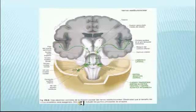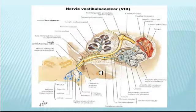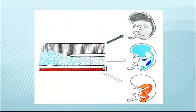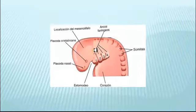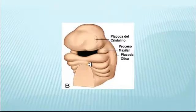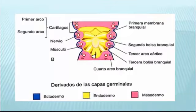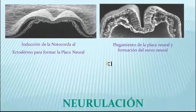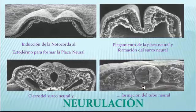El sentido del oído corresponde al octavo par craneal. Junto con el cerebelo, controla el equilibrio, denominándose por esta razón vestíbulo coclear. Se forma embriológicamente de las tres capas germinativas. Sus elementos tienen relación con los dos primeros arcos branquiales o faríngeos, interviniendo en su integración varios de sus componentes. Se agrega un cuarto elemento: una diferenciación de la capa ectodérmica por inducción de la notocorda.